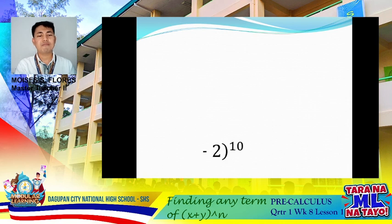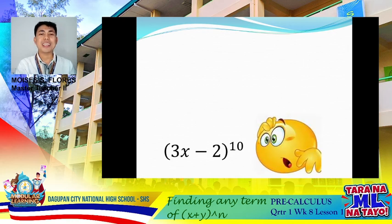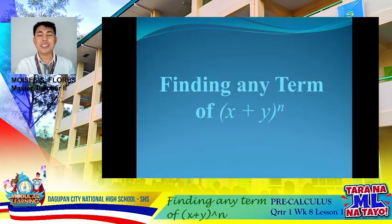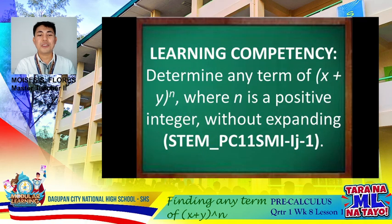So our answer could be 27x cubed minus 54x squared plus 36x minus 8. And what if we have (3x minus 2) quantity raised to the power of 10? How do we expand that? It is said to be time consuming. But today our lesson is finding any term of quantity (x plus y) raised to n, and our learning competency is to determine any term of (x plus y) raised to n.